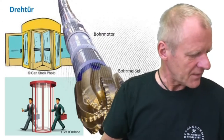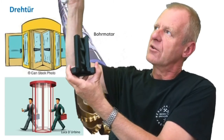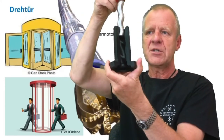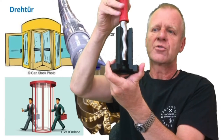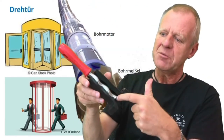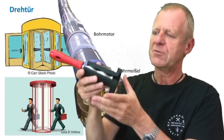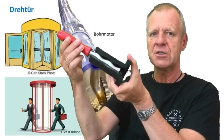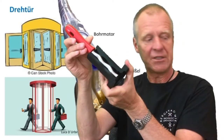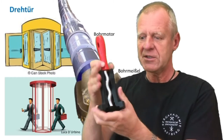In the downhole motor, we have a rotor and a stator. The rotor sits in the stator. The stator and the rotor are shaped in such a way that they form small chambers which are sealed against each other. So as the drilling mud is pressed through the motor, the rotor is forced to rotate, just like the supermarket revolving door.